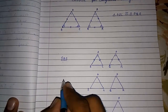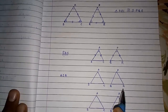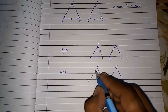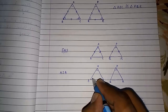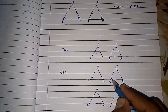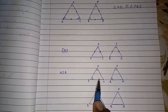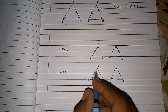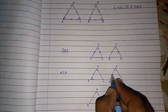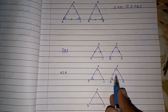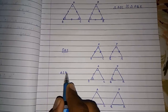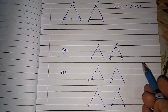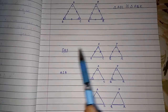The second rule is Angle-Side-Angle (ASA). If in two triangles two angles are equal and the side between them is also equal, then we can say these two triangles are congruent by the Angle-Side-Angle rule. I have made a video on how to write this congruency — if you want to see it, check my previous video; I will give the link in the description.